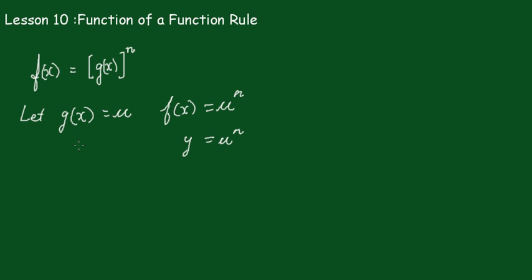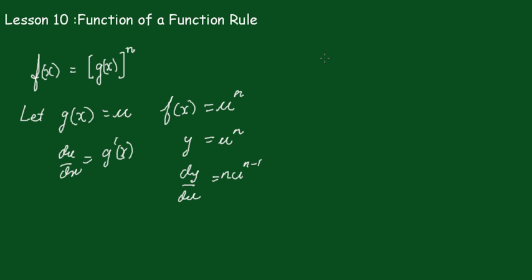We can see that du/dx is going to be the derivative g'(x). And we know that dy/du is equal to n·u to the n minus 1. Bringing in the chain rule, we can see that dy/dx is equal to dy/du times du/dx.